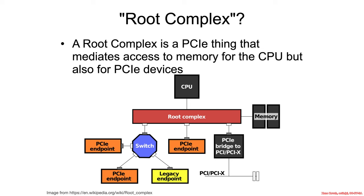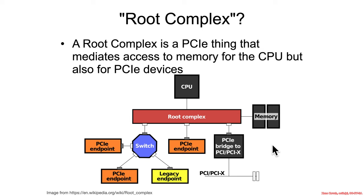So that brings up the question of what exactly is a root complex register block. It turns out that a root complex is a PCI thing that has to do with access to memory for PCI devices as well as the CPU. There's a nice diagram from Wikipedia showing PCI devices, switches inside the PCI network, PCIe-to-PCI bridges for legacy devices on other buses, and how both the CPU and devices are mediated by the root complex when trying to get to memory. This shows intuitively how something like DMA might work — DMA being direct memory access, where certain PCIe peripherals can directly access memory without going through the CPU.